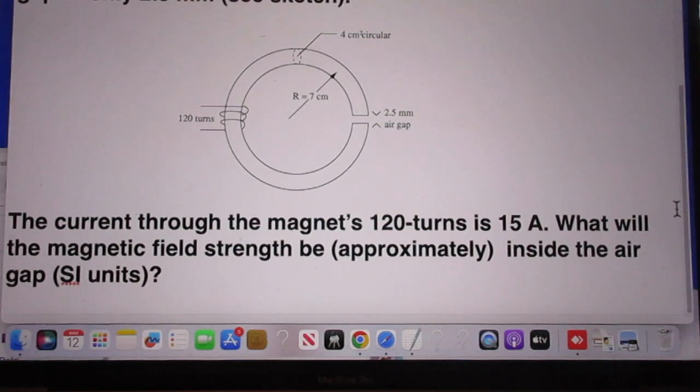The current through the magnet's 120 turns is 15 amperes. What will the magnetic field strength be approximately inside the air gap? Of course we want that in SI units, which is Tesla.